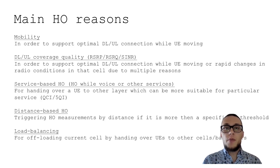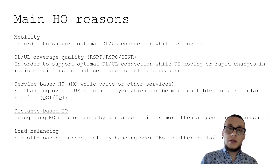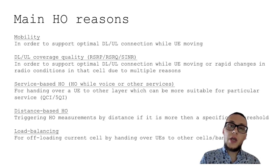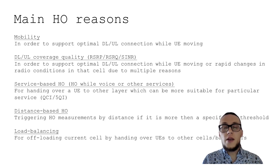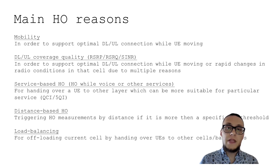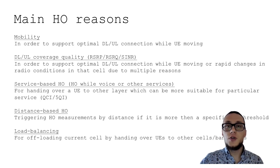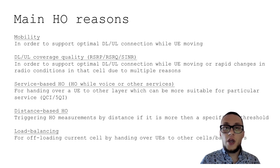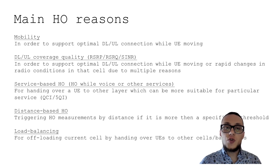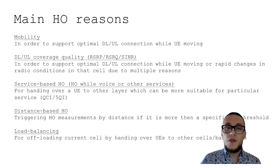Of course, when user equipment moves, downlink and uplink coverage quality can degrade. Networks should support the connection not only when user equipment moves, but also when it may experience different radio conditions, because the network is alive. Changes in radio conditions due to interference or load situation in cells and neighbor cells — that's why networks try to support uplink and downlink connections and may make a handover decision based on those measurements.